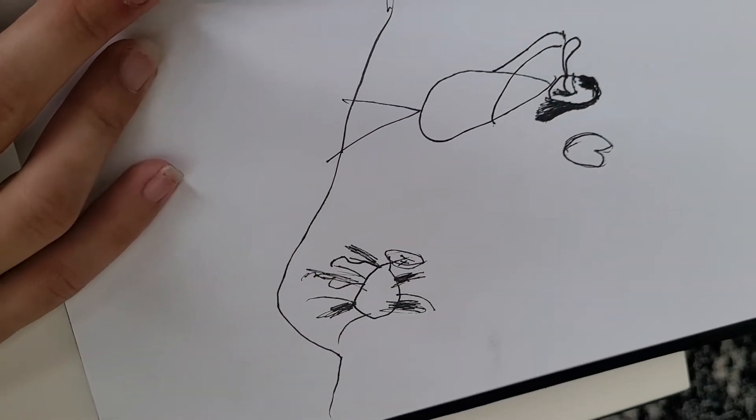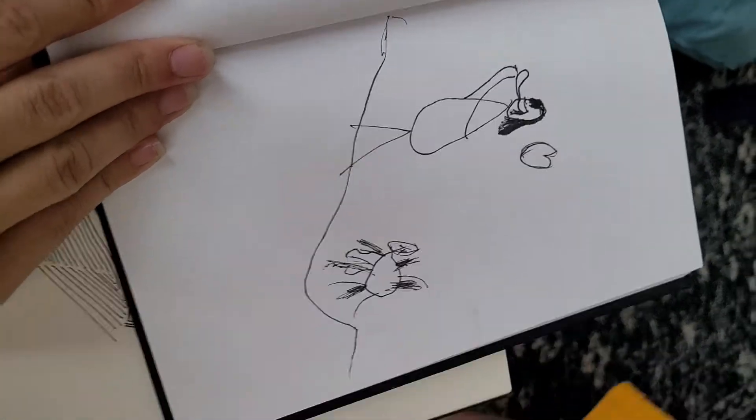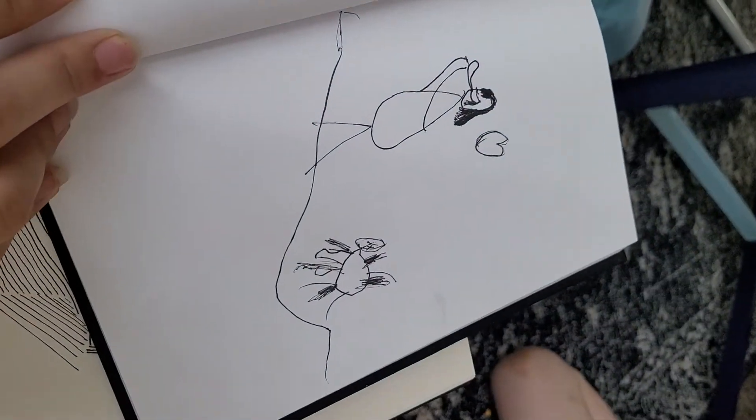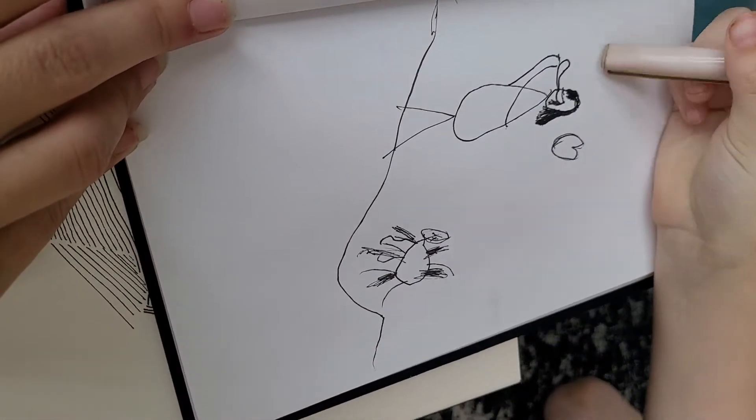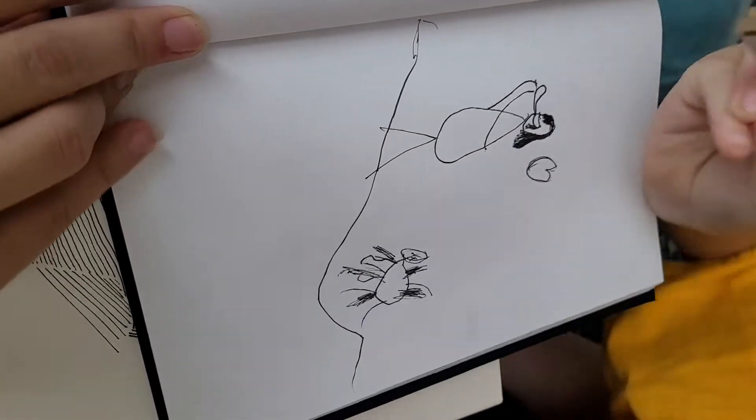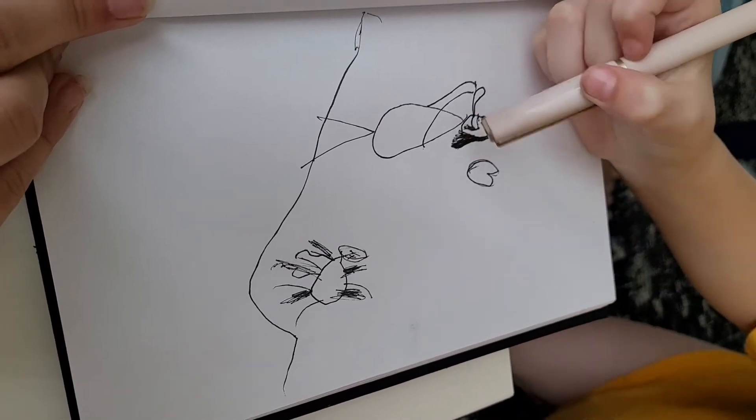Pause the music really quick and tell me what you drew. I drew a dead person right there, and that person was the killer. Oh yeah, and there was blood going down her mouth and she was drooling.